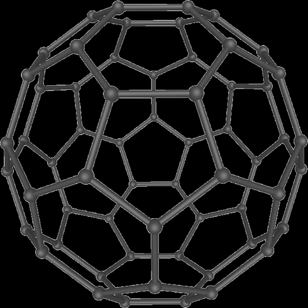In 1992, fullerenes were found in a family of minerals known as shungites in Karelia, Russia. In 2010, fullerenes were discovered in a cloud of cosmic dust surrounding a distant star 6,500 light-years away. Using NASA's Spitzer infrared telescope, the scientists spotted the molecule's unmistakable infrared signature. Sir Harry Kroto, who shared the 1996 Nobel Prize in chemistry for the discovery of buckyballs, commented: 'This most exciting breakthrough provides convincing evidence that the buckyball has, as I long suspected, existed since time immemorial in the dark recesses of our galaxy.'